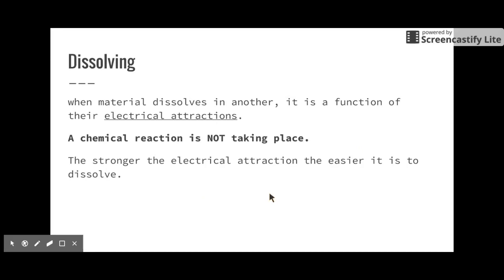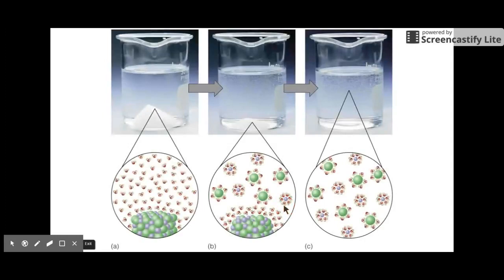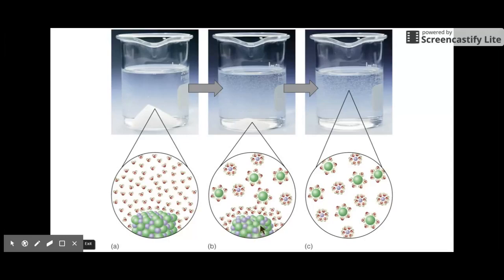Here we have dissolving over time. Somebody put salt — sodium chloride — inside water. Water is polar: it has a partially positive end and a partially negative end. Each end of the partial charge is attracted to each part of the sodium and chloride ions — sodium being positively charged, chloride being negatively charged. So what's happening is the water molecule is literally coming in and pulling apart piece by piece the ionic compound of sodium chloride. Eventually it's all dissolved — it all deals with that electrical attraction pulling it apart.